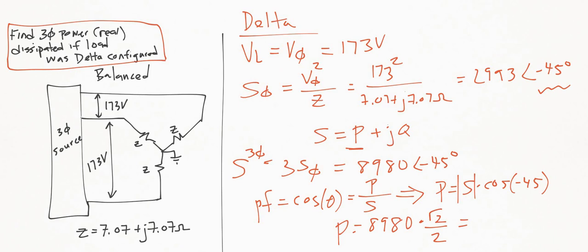That gives us the power when we plug in S. We get 8980, this would be the magnitude of S, times the cosine of 45°, which is root 2 over 2. That ends up giving us 6.35 kilowatts. That is the three-phase real power dissipated on a Delta load.